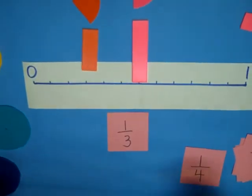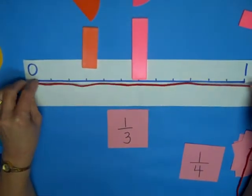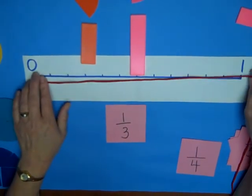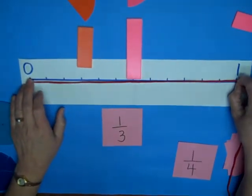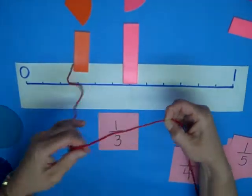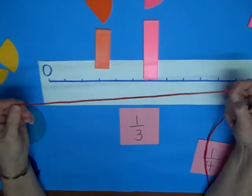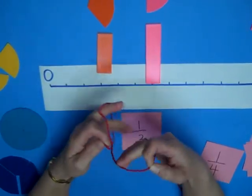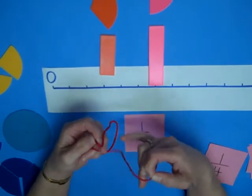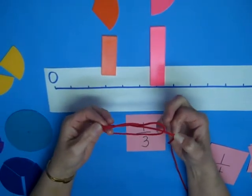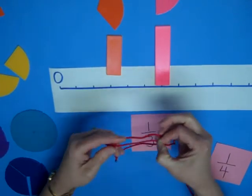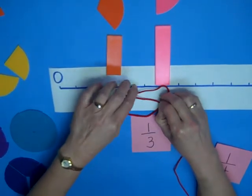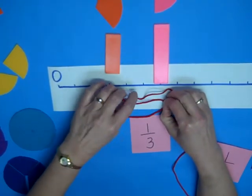Now, folding this paper might be a little tricky. So, if we use the string, we can say up to my thumbnail is going to be my number line. Now, I need to get this into thirds. Now, I would ask the students to figure out, how are you going to fold this so that I get three equal parts?